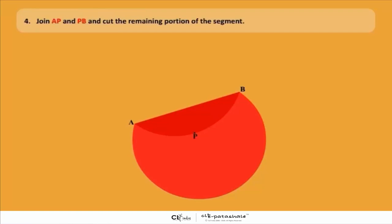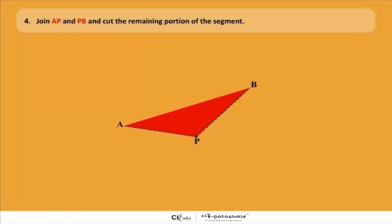And after that, observe the diagram carefully. You have to join AP and PB and cut the remaining portion of the segment. Then the next step is you have to take the triangle.